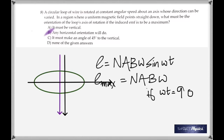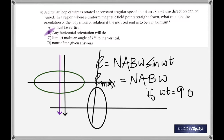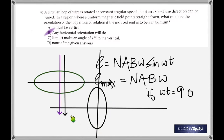Therefore the coil has to be rotating about an axis that is horizontal. To give a better idea: if the axis is horizontal and the magnetic field is pointing down, the angle between the perpendicular drawn to the coil and the magnetic field is 90 degrees. So the coil is spinning this way and the axis is horizontal.